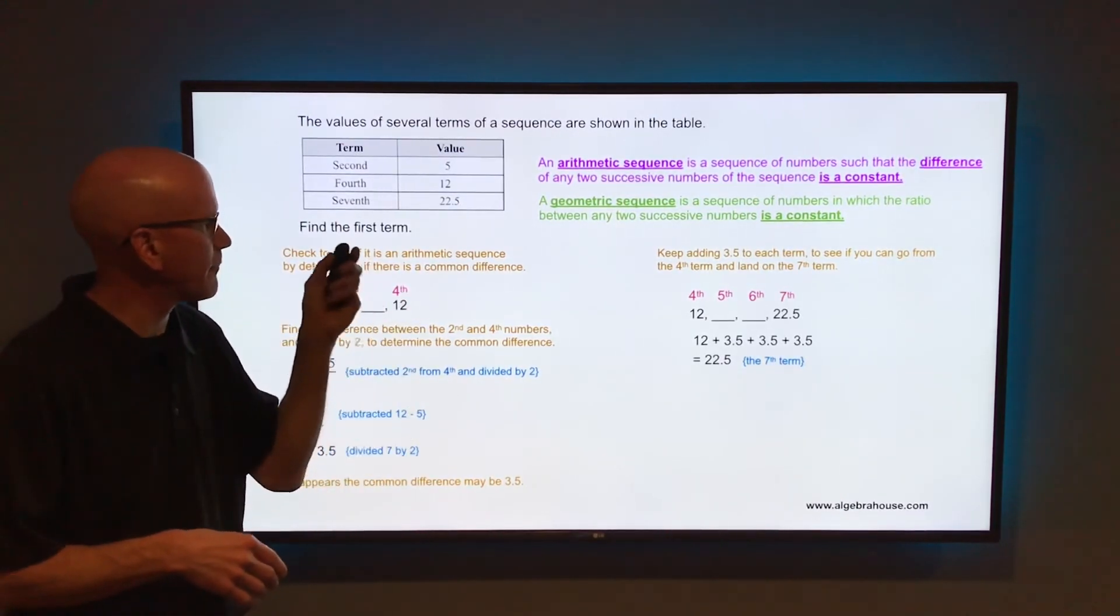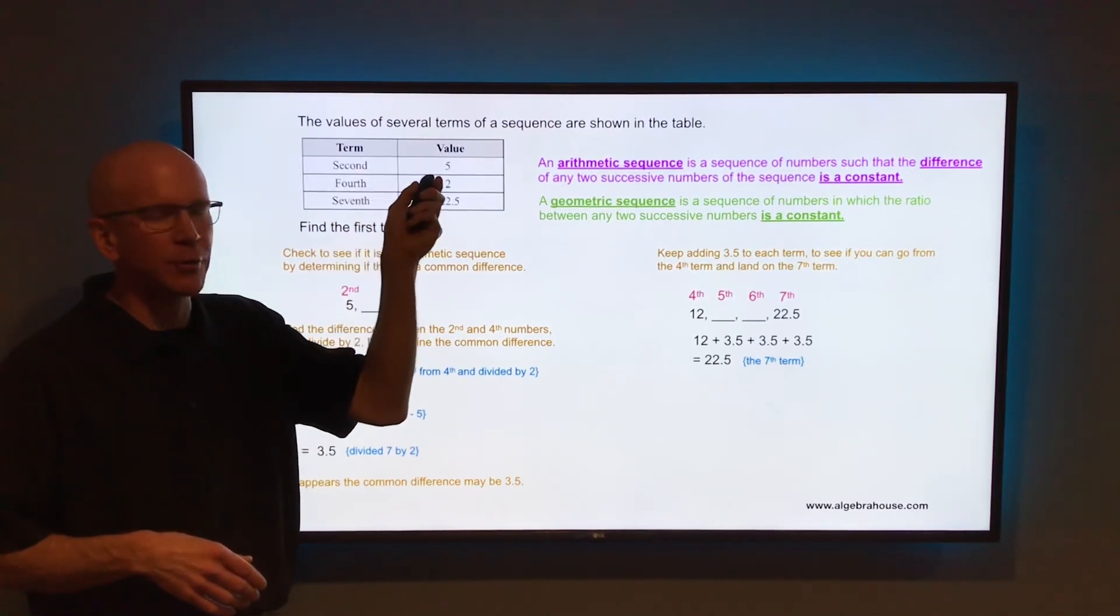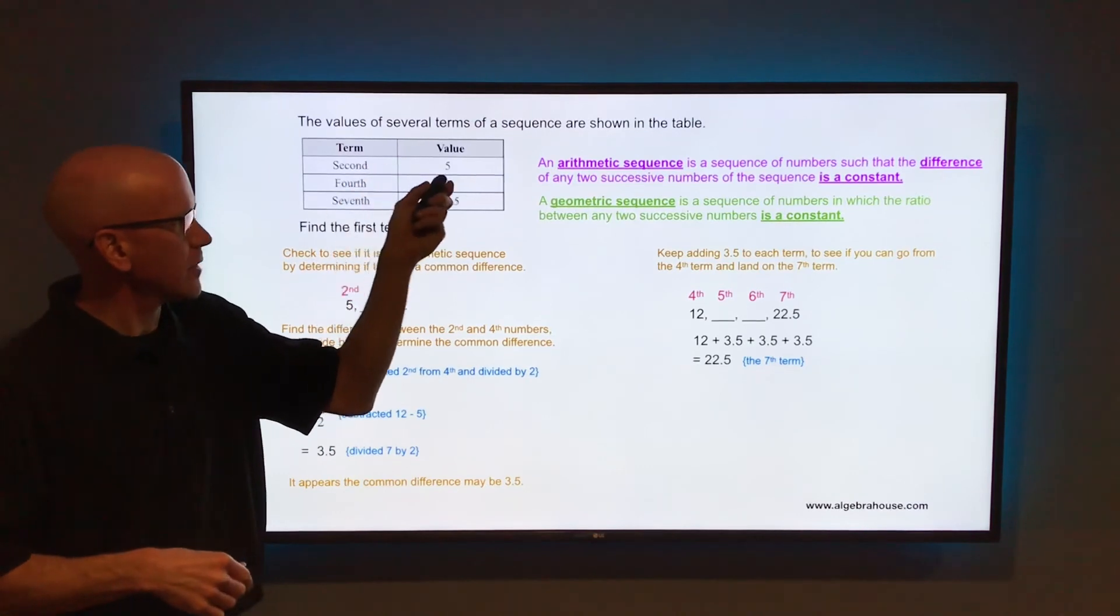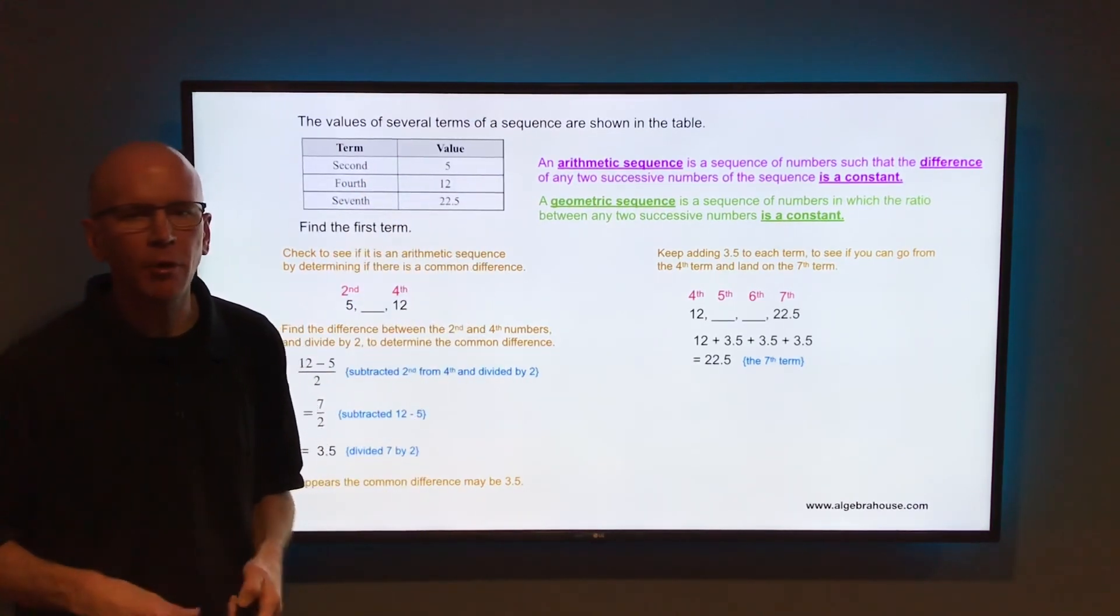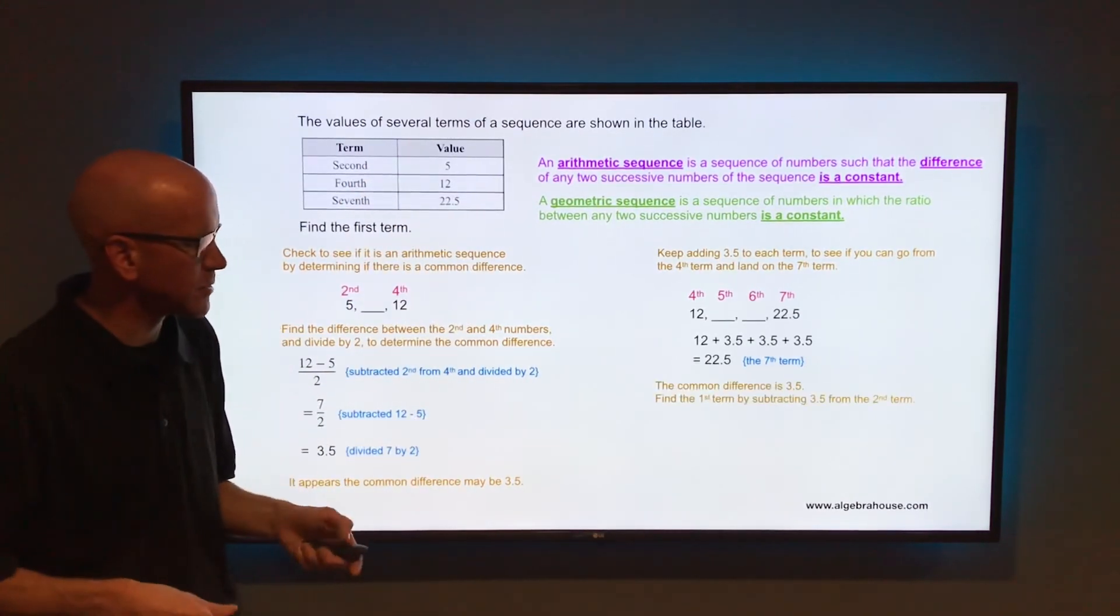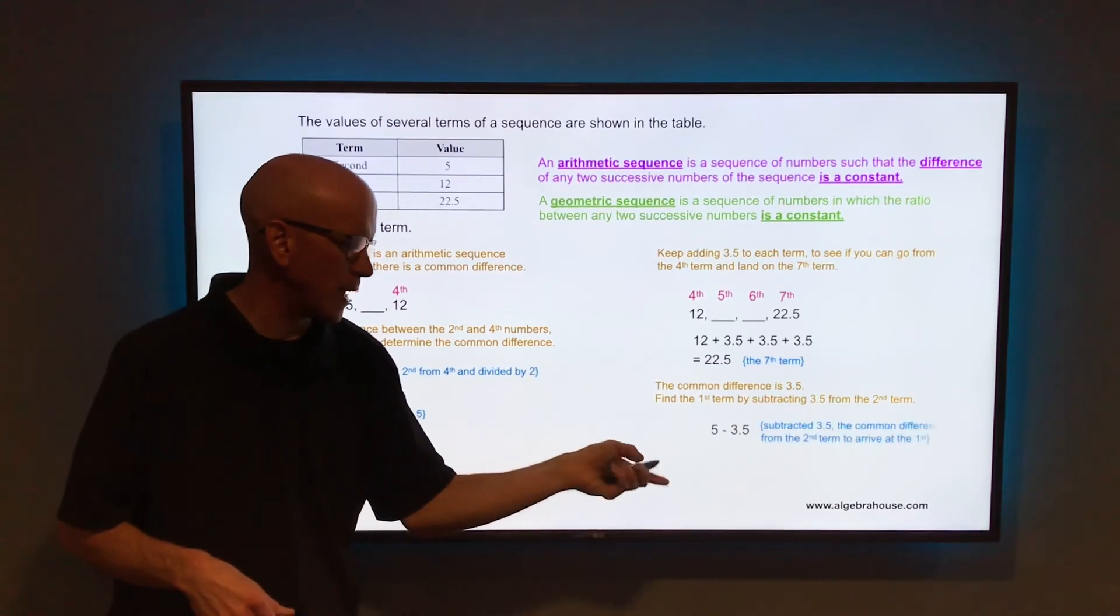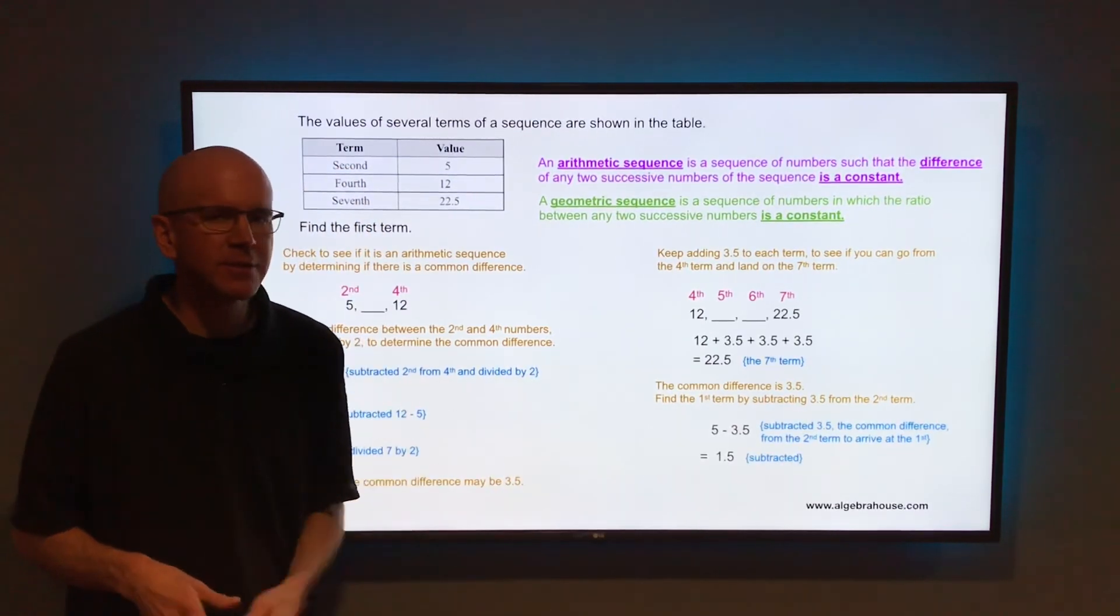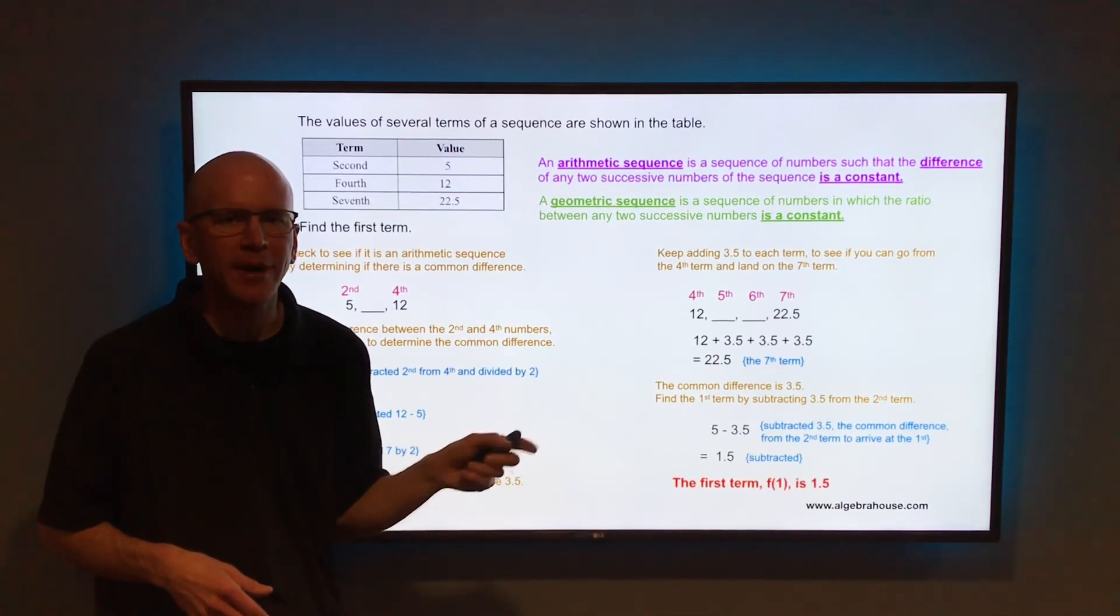Now what do we do with that? Well we need the first term. We know what the second term is, so to get the first term we're going backwards. So start at 5, go backwards 3.5. In other words, take 5 minus 3.5 and that puts you at 1.5. So what is the first term? Right there it is. The first term is 1.5.